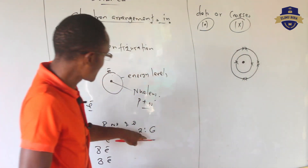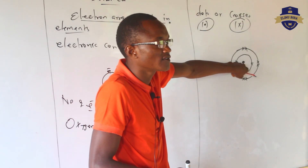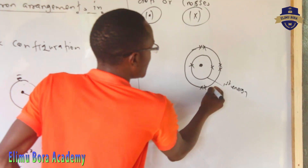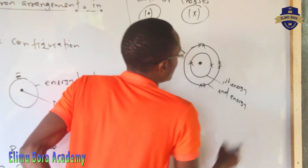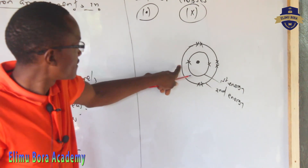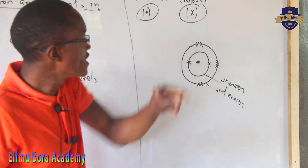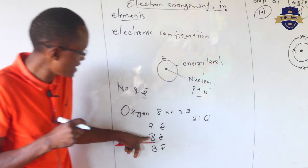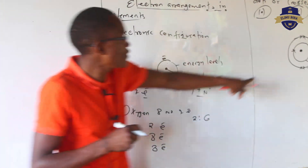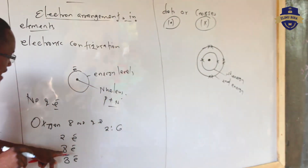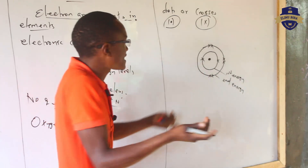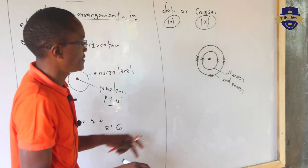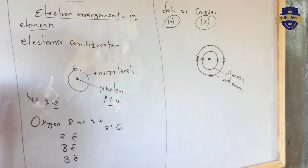So you have now represented the electronic configuration in a diagram of an atom. From the center we have the nucleus, then the first energy level carrying a maximum of two, and the second energy level carrying six. For oxygen to become stable it must gain two more electrons, since the second energy level takes a maximum of eight and we already have six. It doesn't matter where you leave the space, so long as it is within the same energy level.